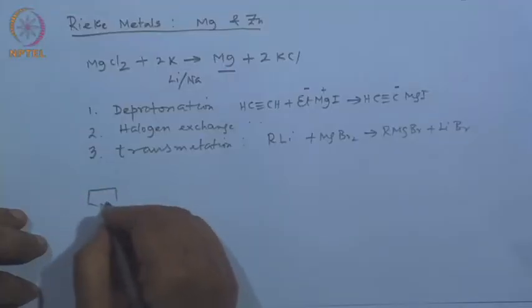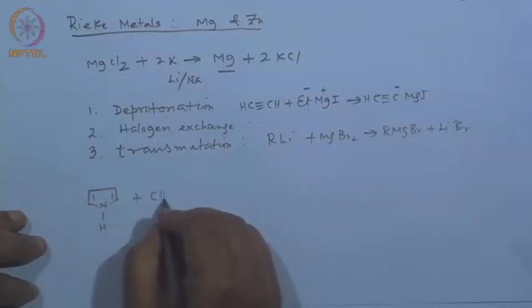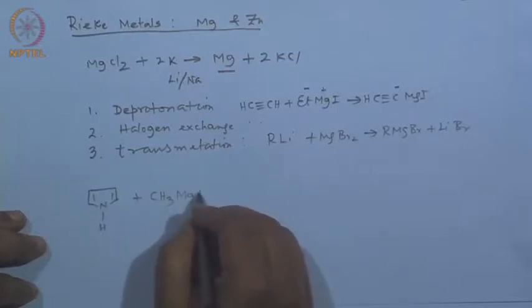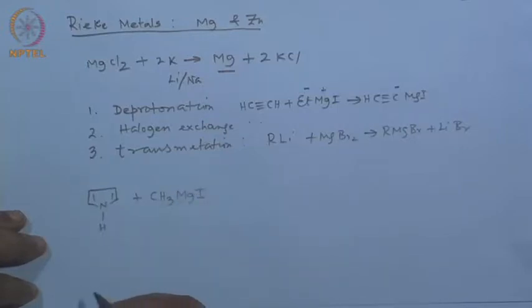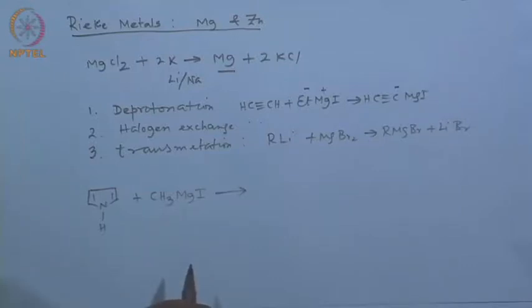Coming to heterocyclic chemistry, the very first thing we should talk about is the case of, let us say, pyrrole. Let us look at the feasibility of these reactions with methyl magnesium iodide, which is commonly made. Normally, methyl magnesium iodide is nucleophilic in nature, but the very first thing we should consider is the deprotonation reaction or the halogen exchange reaction — those are the first reactions. We have an active proton here.